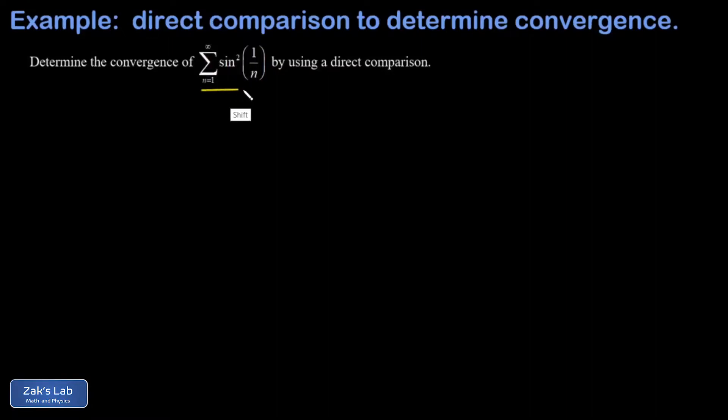In this problem, we're asked to test the convergence of the series sine squared 1 over n. And we're asked to do this specifically by using a direct comparison. And so this problem is actually very quick if you remember an important inequality that pops up in some of the more exotic problems.